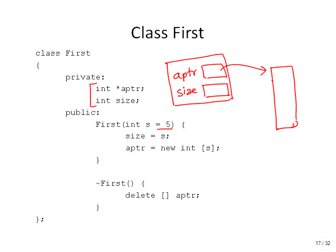As the constructor runs, the A pointer is pointing to an array of integers. By default, it will create an array of 5. Since the constructor is allocating memory, we need a destructor which will delete that extra memory. That's what this destructor does — delete the array pointed by the A pointer.